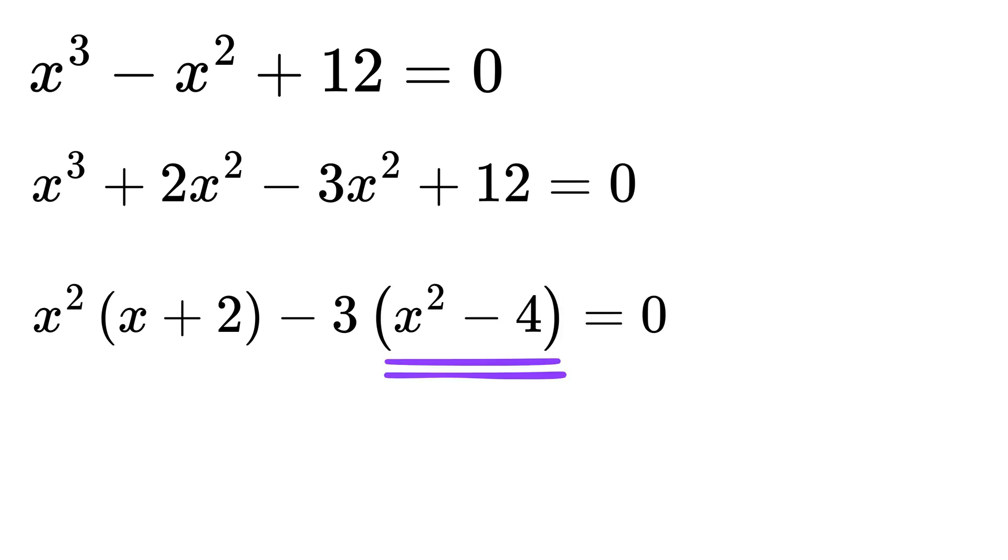Next, this x squared minus 4 can be written as x squared minus 2 squared, which is of the form a squared minus b squared, which equals a plus b times a minus b. Hence, it can be written as x minus 2 times x plus 2. So far, so good.